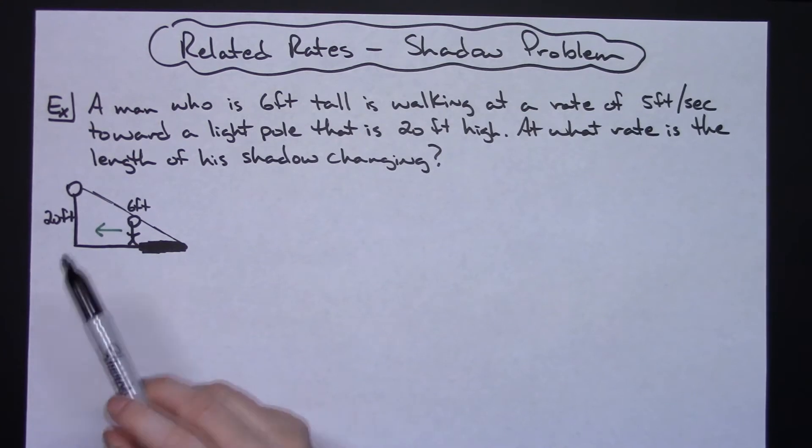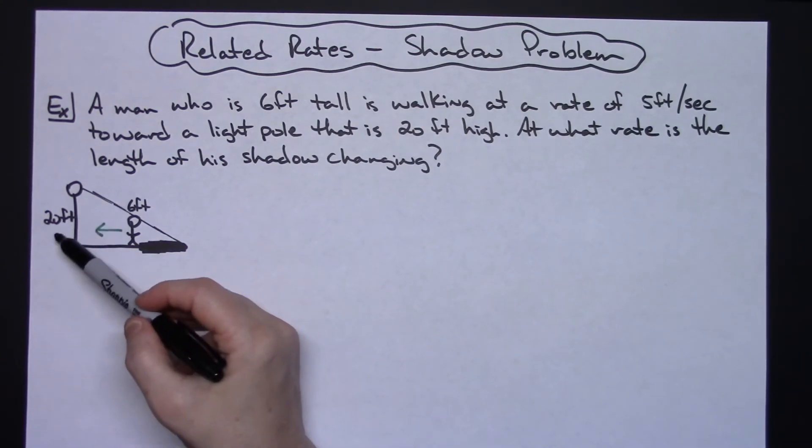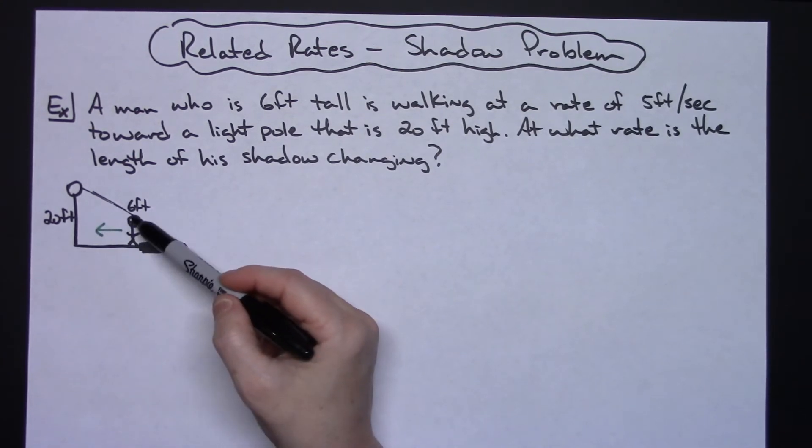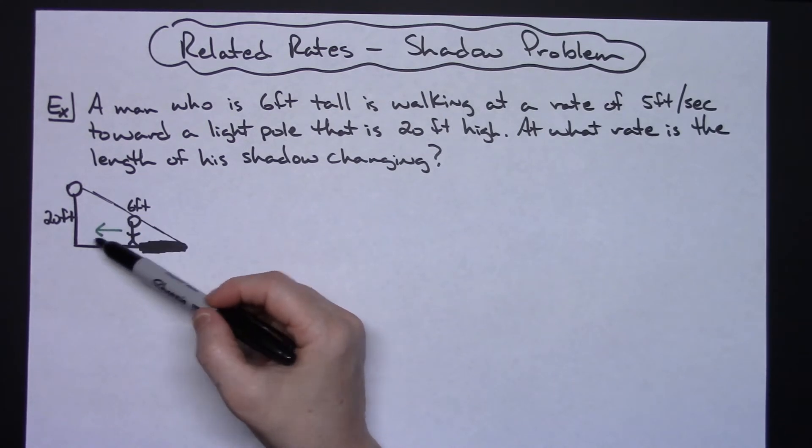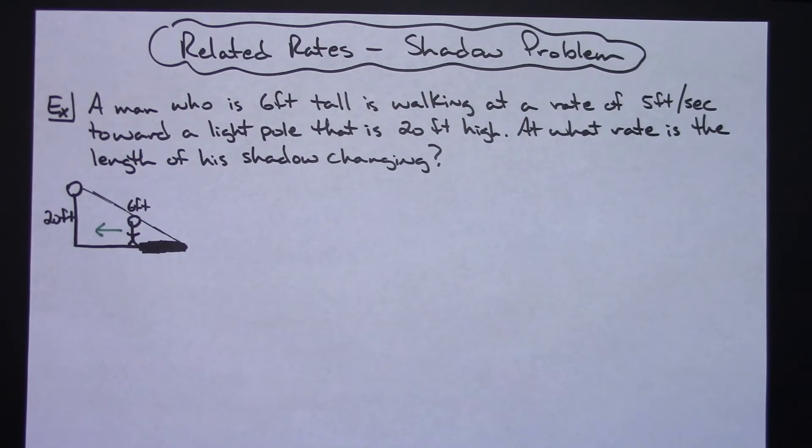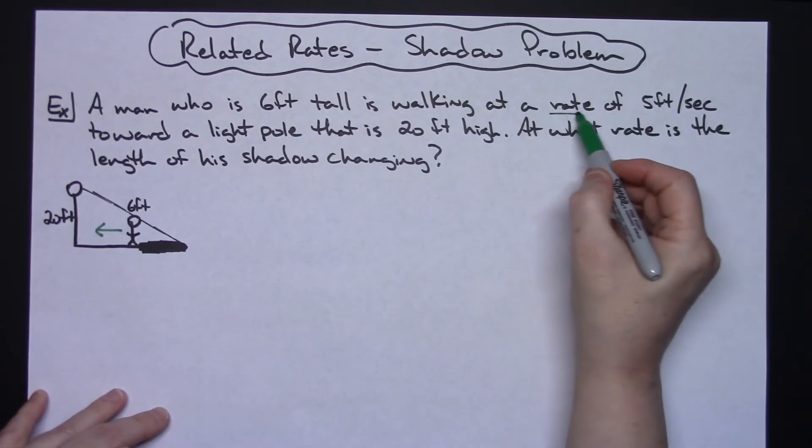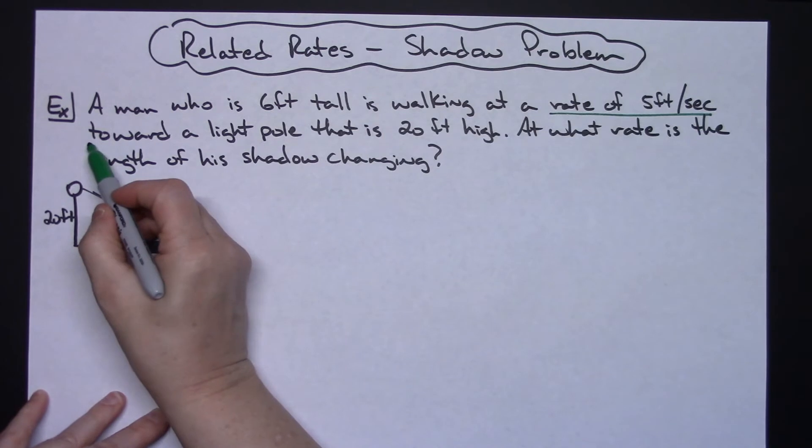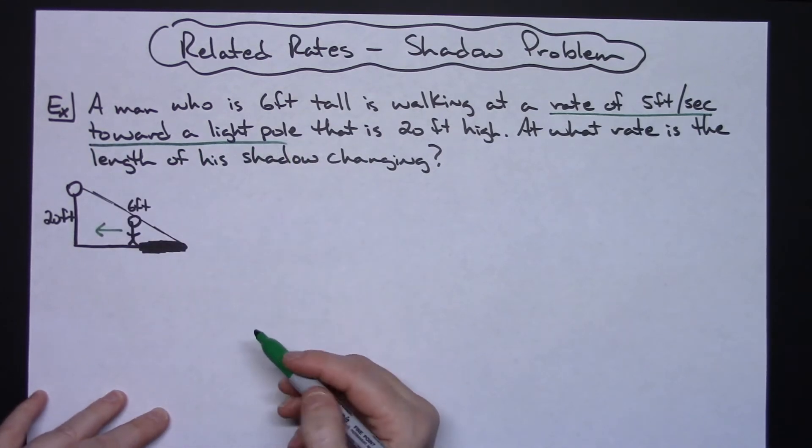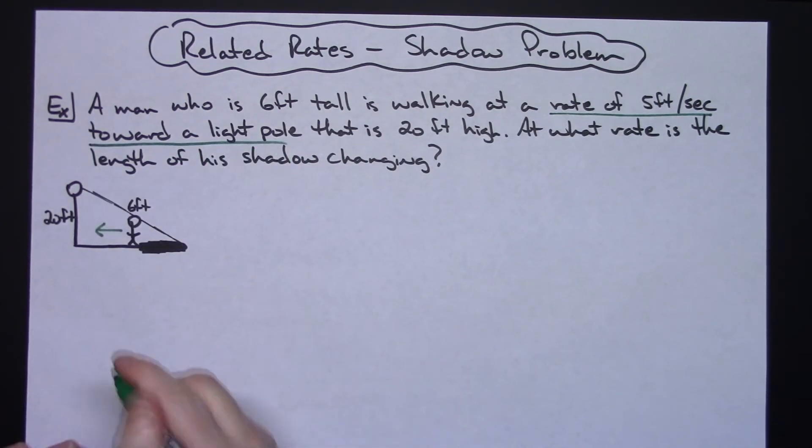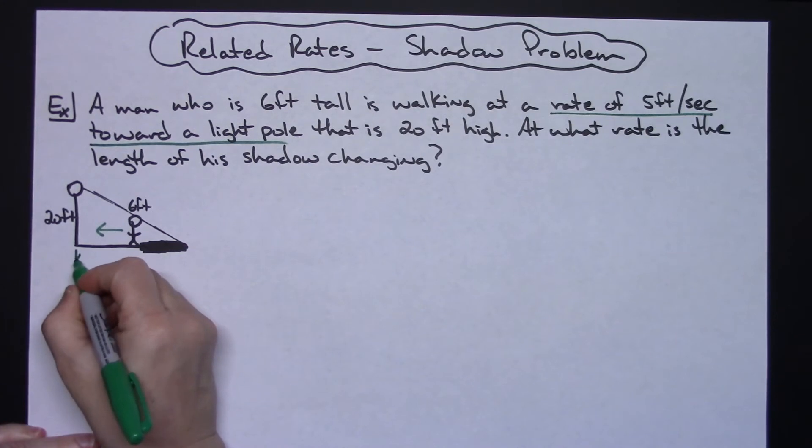Just to save a little bit of time here, I went ahead and did a rough sketch. We have a light pole that's 20 feet tall. We have a person that is six feet tall. He is walking toward the light pole, and it did give that rate. He is walking at a rate of five feet per second toward the light pole.